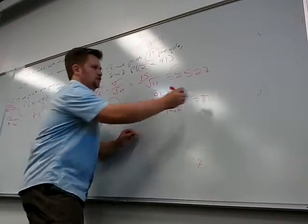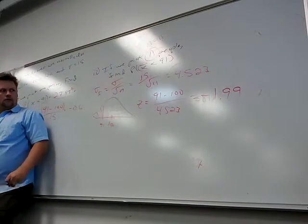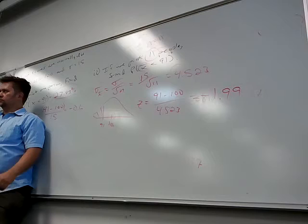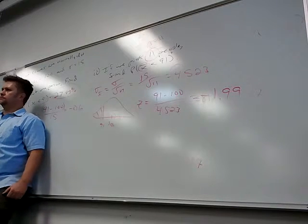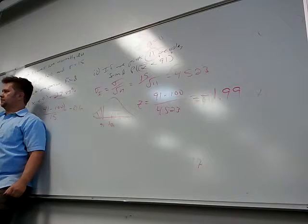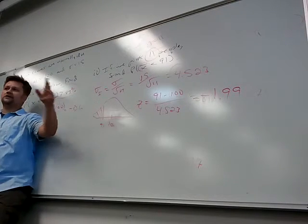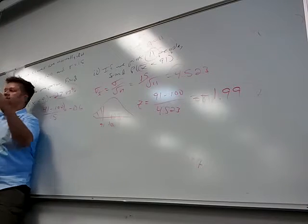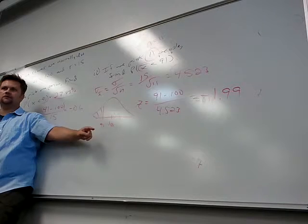Negative 9 divided by 4.5 is going to be roughly negative 2, a little bit less. So negative 1.99. But you always round to how many places? Two places. For z-score, of course, because the z-score chart only goes out two places. So if you look at negative 1.99, what's your z-score chart say for that? 0.0233.